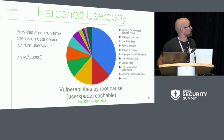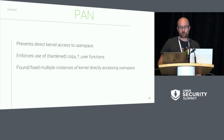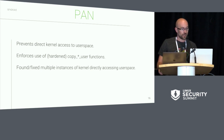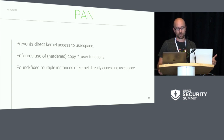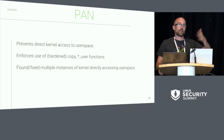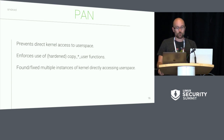Hardened usercopy provides a mitigation against this area, specifically by hardening the copy-to or copy-from-user functions. We also have something called PAN — Privileged Access Never — which prevents the kernel from directly accessing a user space process's memory. That's useful for two reasons: first, it forces all communication to and from the kernel to go through those newly hardened copy-to and copy-from-user functions. The other reason is that the kernel directly accessing a user space process's memory is really racy, and if the kernel is trying to access this process's memory while the process is directly changing it at the same time, that could cause kernel bugs.